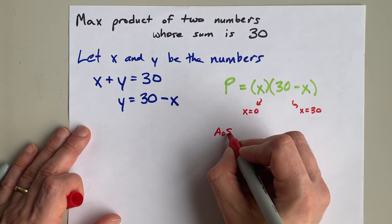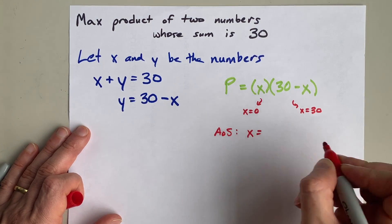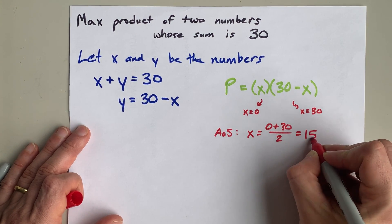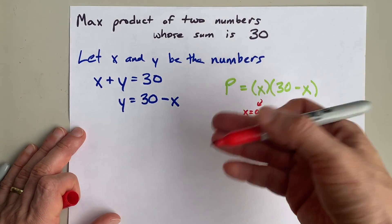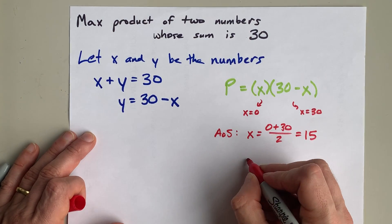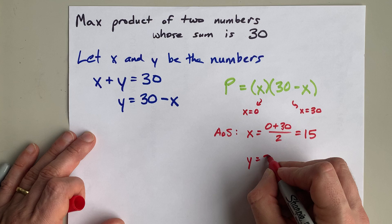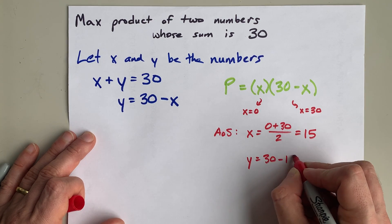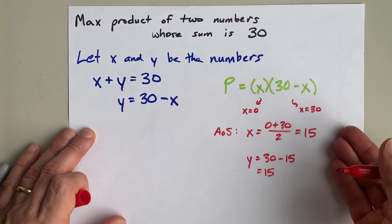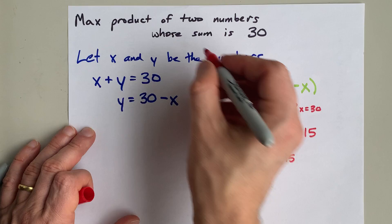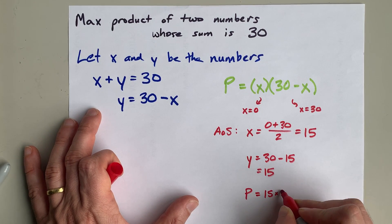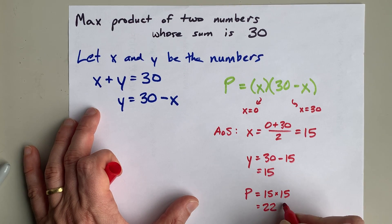The axis of symmetry for this parabola is going to be the average of those two x-intercepts, which is 15. That means the product is maximized when x is 15. That means y, the other number, is 30 minus x, which is 30 minus 15, also 15. So the maximum product, which is what was asked for, is 15 times 15, which is 225.